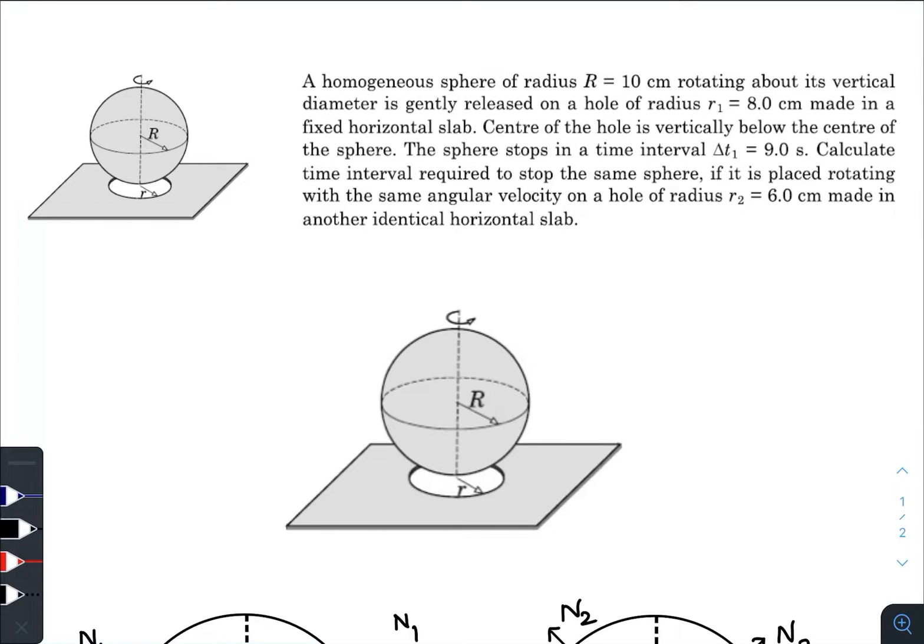Hey, what is up everyone! I hope all of you are doing great. In today's question we have a homogeneous sphere of radius R capital R rotating about its vertical diameter is gently released on a hole of radius r1.